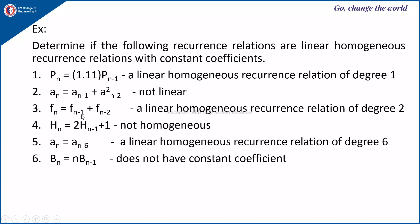f(n) = f(n-1) + f(n-2) is linear with degree 2, since f(n) depends on its previous two terms. For h(n) = 2·h(n-1) + 1: transferring to the left-hand side gives h(n) - 2·h(n-1) = 1, and since f(n) = 1 which is not 0, it is a non-homogeneous recurrence relation.